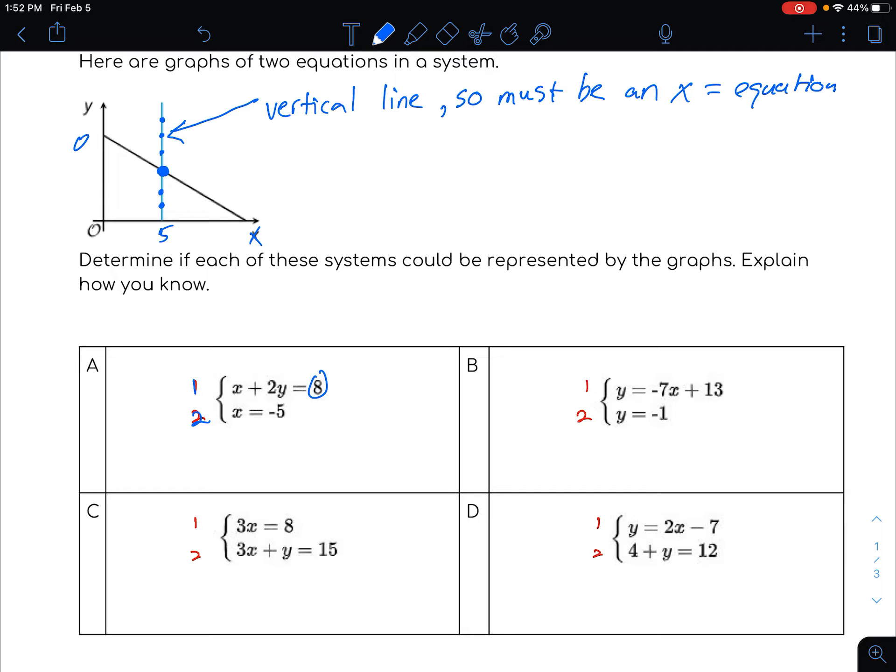So a vertical line always has the same x value. So whenever you have a vertical line, it's going to be an x equals equation. The slope will be undefined because it's a vertical line. And in this case, it has a positive x value. We know that because we can see down below here that this is in the first quadrant, it's on the positive x axis over here and not over here on the negative x axis.